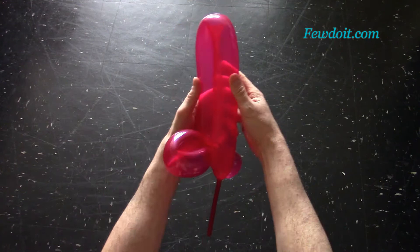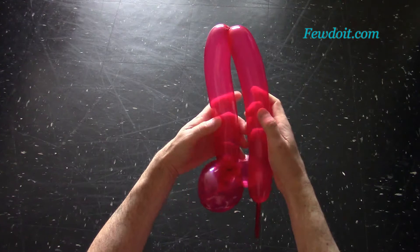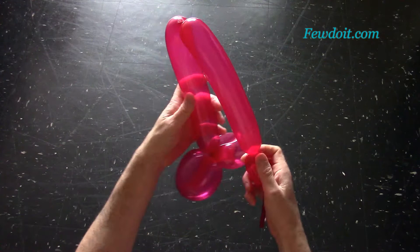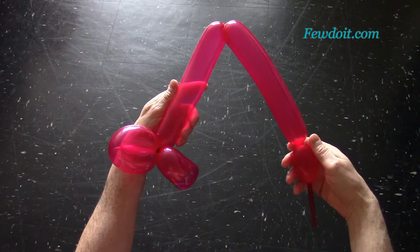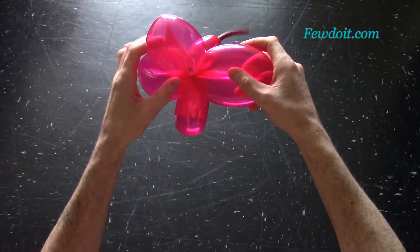Now we have to twist the third and the fourth bubbles. Just make sure to leave about 5-7 cm bubble at the end of the balloon. Make sure the third and the fourth bubbles are of the same size. Lock all ends of the third and the fourth bubbles in one lock twist. We have made a pair of front wings.